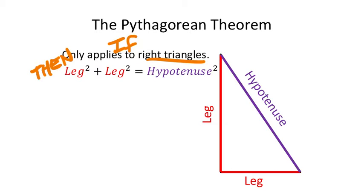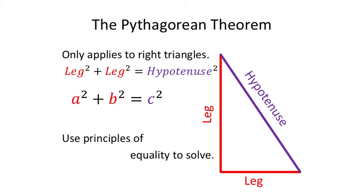Leg squared plus leg squared equals hypotenuse squared. If you make it a squared plus b squared equals c squared, it sounds like Einstein stuff, but it's really just leg squared plus leg squared equals hypotenuse squared. For these problems, we're going to be using principles of equality to solve, and since we're dealing with exponents of two, we'll expect to see square roots.